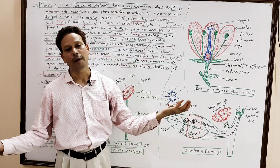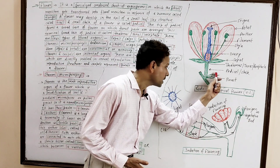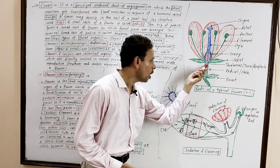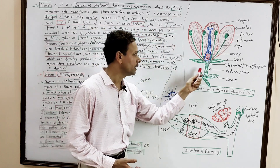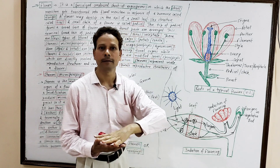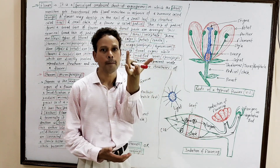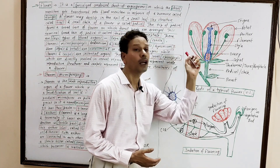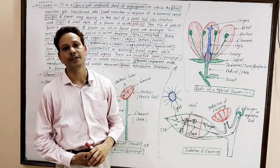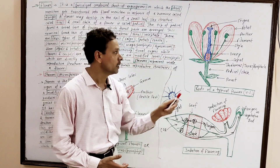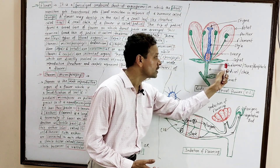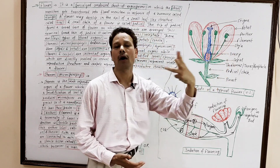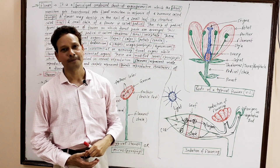This is the structure of a typical flower. A flower may develop in the axil of a leaf-like structure, and that leaf-like structure is called a bract. This small stalk-like structure — the stalk of a flower — is the pedicel. Its terminal part becomes a broad base, and this terminal part of the pedicel on which all floral organs are arranged is called the thalamus, or torus, or receptacle. On this receptacle, all floral organs are arranged.